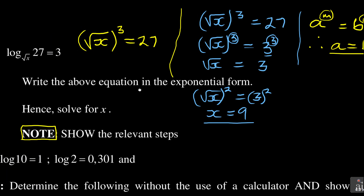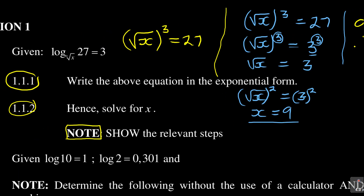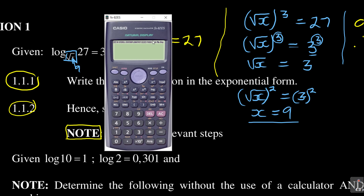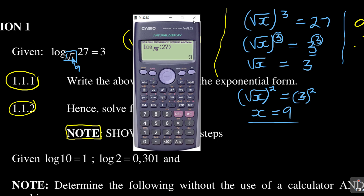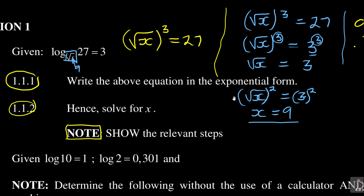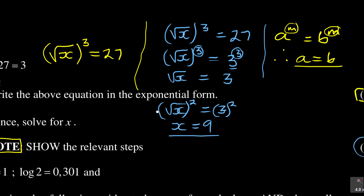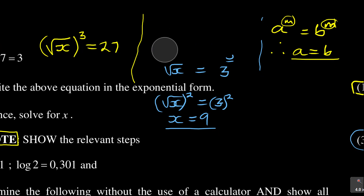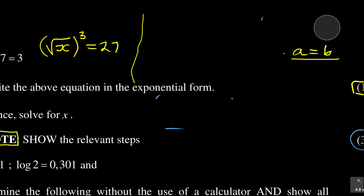You can test that by going back to the original equation. In the base position, substitute 9 — the square root of 9 is 3. Then log base 3 of 27 gives 3, which matches. So that's how you solve this question. There are different ways you could have approached it.